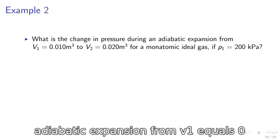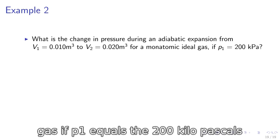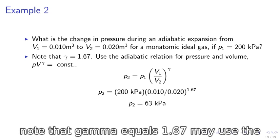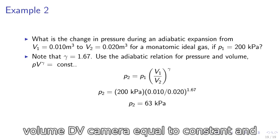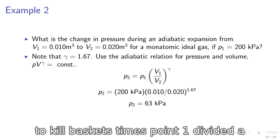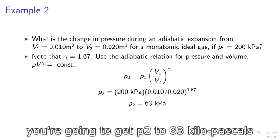Example 2. What is the change in pressure during an adiabatic expansion from V1 equals 0.010 meters cubed to V2 equals 0.020 meters cubed for a monatomic ideal gas if P1 equals 200 kPa. Note that gamma equals 1.67. We may use the adiabatic relation for pressure and volume, which is PV gamma equals constant. We thus obtain P2 equals 200 kPa times 0.01 divided by 0.02 to the power of 1.67. And you get P2 equals 63 kPa.